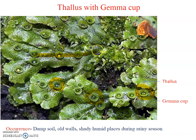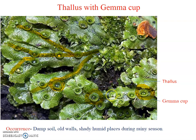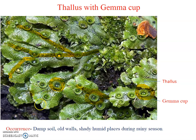Marchantia is dichotomously branched — from one branch it divides into two, and again into two. At the end of each branch there is a notch. Gemma cups are present on the midrib. The function of the gemma cup is that it takes part in vegetative reproduction — we will see more about gemma cups in the next video.